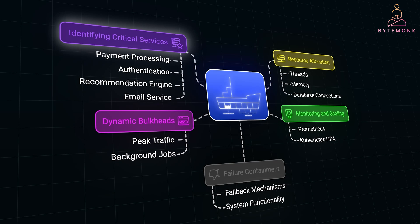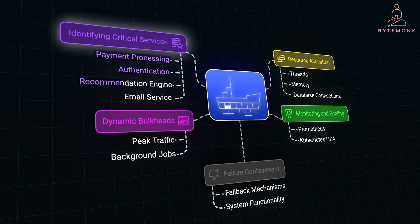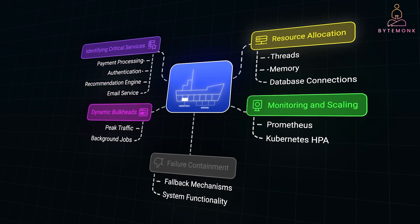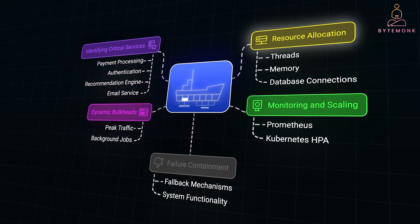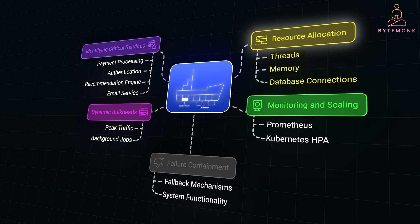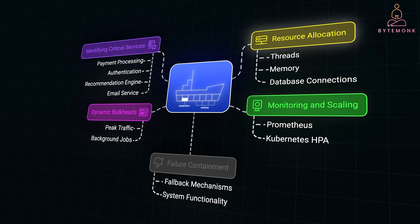Typically, services involved in payment processing or authentication are mission-critical, while a recommendation engine or email service is less so. Properly allocate resources like threads, memory, and database connections to each service. Too many resources allocated to a non-critical service can lead to waste, while too few resources for a critical service could cause failures.